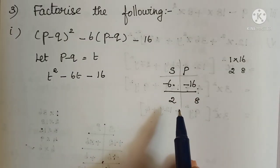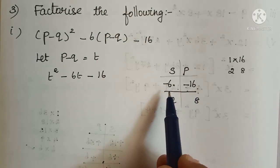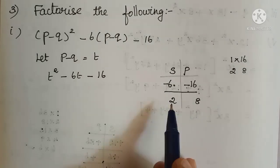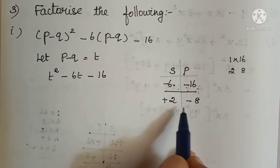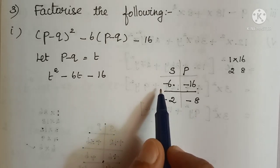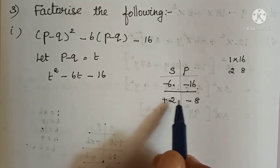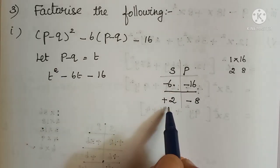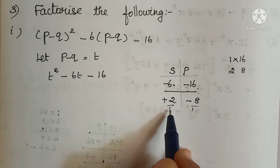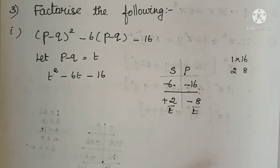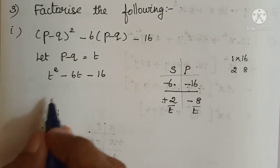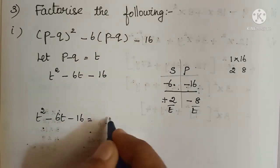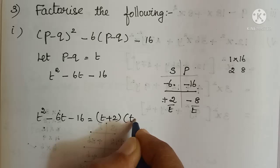Now we take the minus sign. Sum is negative and product is negative, so we choose the greater number as negative. So: plus 2 and minus 8. Adding: plus 2 plus minus 8 gives minus 6. Multiplying: plus 2 into minus 8 gives minus 16. The coefficient of t squared is 1, so we split the variable as t plus 2 into t minus 8. So t squared minus 6t minus 16 equals (t+2)(t-8).